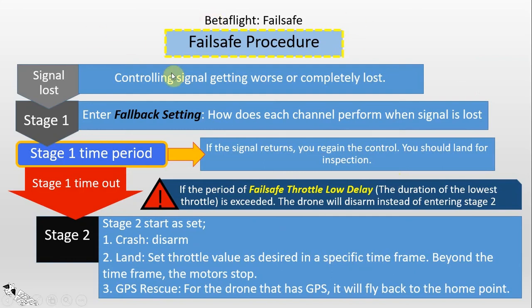Here are the steps that the failsafe happens — I call it the failsafe procedure. First, you lose the controlling signal, but it might be a temporary loss or permanently lost — we are not sure yet at this step. However, the quadcopter will enter into Stage 1, which will use the fallback setting. I will explain more about the fallback setting later; just remember that in Stage 1 the quadcopter will act according to what you set in the fallback setting.